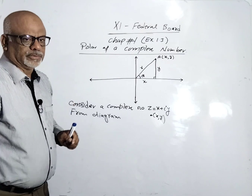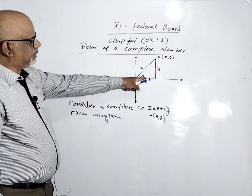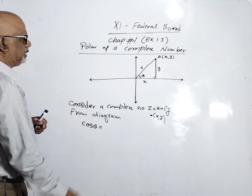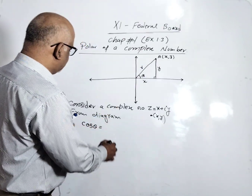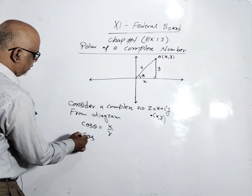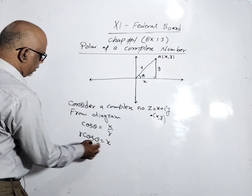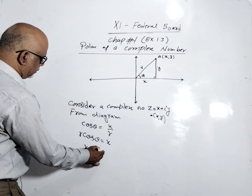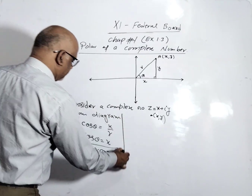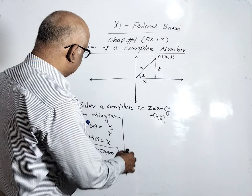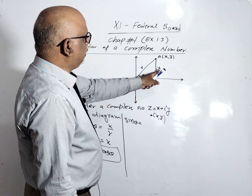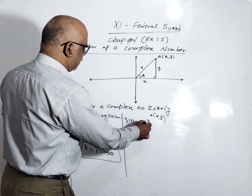Now, if we consider the value of cos θ, it is base over hypotenuse, that is x over r. So cos θ = x/r, which gives x = r cos θ. And sin θ is perpendicular over hypotenuse, that is y over r.